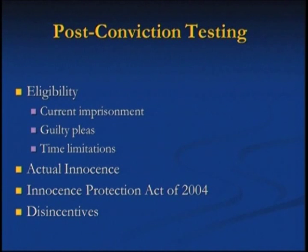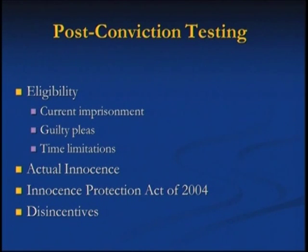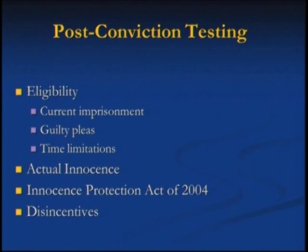About 314 people have been exonerated through DNA technology through the Innocence Project and its affiliates. About 18 of those were death penalty cases — these people were on death row. DNA is used obviously in crimes of violence: rapes, assault, murders. These are the most usual crimes where DNA evidence is used, though they've been trying to expand it to other contexts.